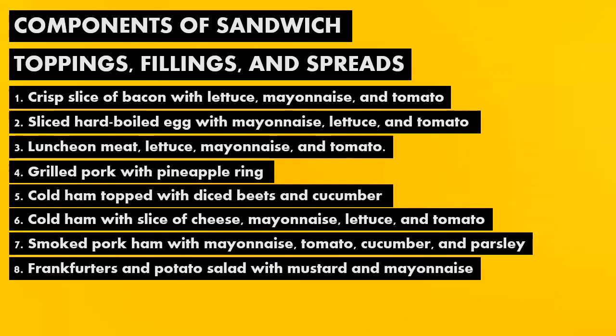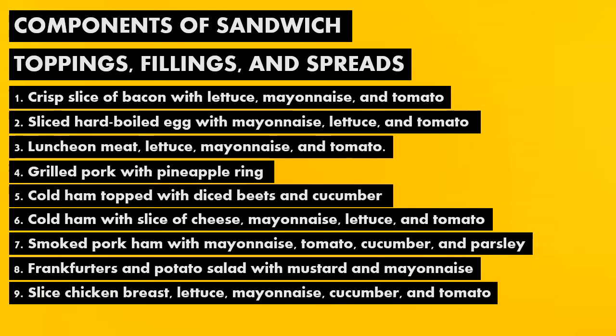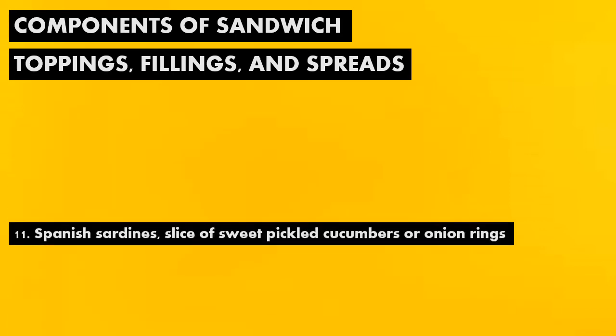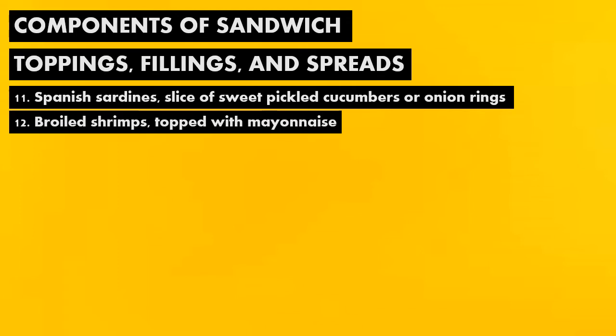And of course, we have frankfurters and potato salad with mustard and mayonnaise. Ninth, we have sliced chicken breast, lettuce, mayonnaise, cucumber, and tomato. And tenth, we have cooked sausages with lettuce, onion rings, and mayonnaise. Of course, we also have Spanish sardines with slices of sweet pickled cucumbers or onion rings, and broiled shrimp topped with mayonnaise.